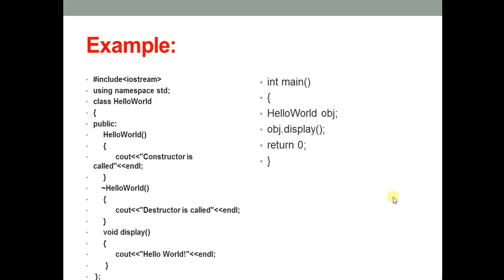This is an example demonstrating the working of a destructor. We have created a class called HelloWorld. Under the public section, there is a function HelloWorld — the name is similar to the class name, there is no return type, and there is no argument — so this is a default constructor. It simply displays the message 'constructor is called'.